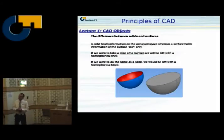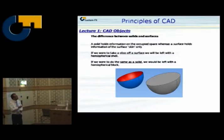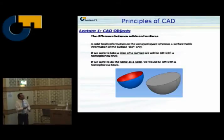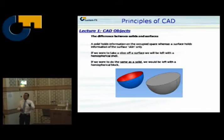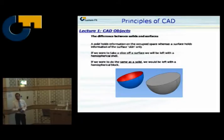The real difference between surfaces and solids: take a sphere — when you cut through a surface description of a sphere, you end up with an open sphere. When you make a cut through a solid sphere, you end up with half of a golf ball. So that's the difference: with a solid there's always material inside, and with a surface description there's air inside.